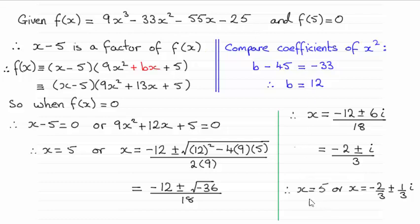As you can see, those solutions are x equals 5, or you've got the complex numbers x equals minus 2/3 plus or minus 1/3 i. Now I'll take you through this just in case there were any problems.